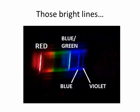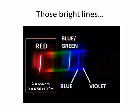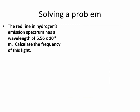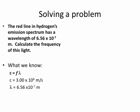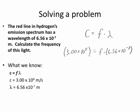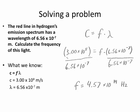Here are the bright lines of the hydrogen spectrum. We're going to look closely at the red bright line: it is made up of photons with a wavelength of 6.56 times 10 to the negative 7th meters. We're going to calculate the frequency of those photons using the equation from the formula chart and the value of C. Write down the equation, substitute in the value of C and the wavelength, then solve for frequency by dividing both sides by the wavelength. The frequency you get is 4.57 times 10 to the 14th hertz — the unit for frequency.